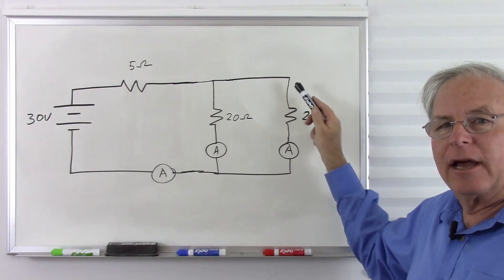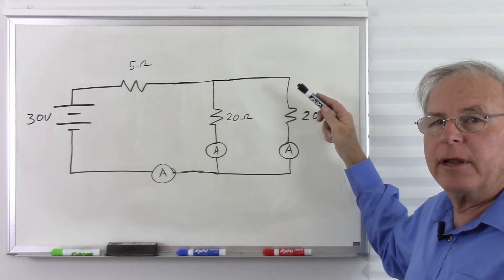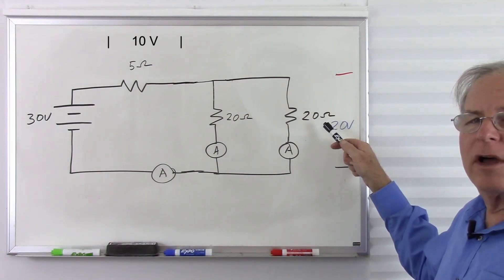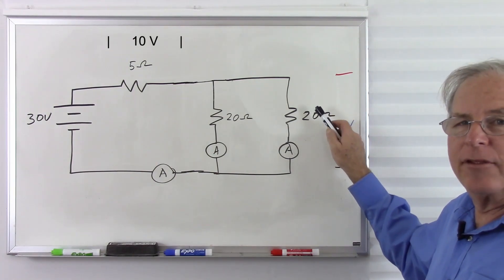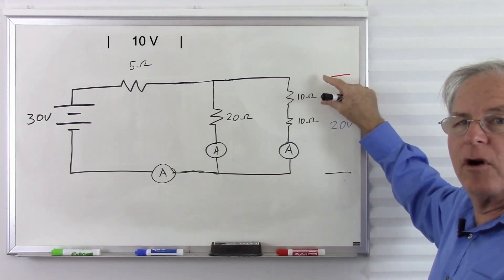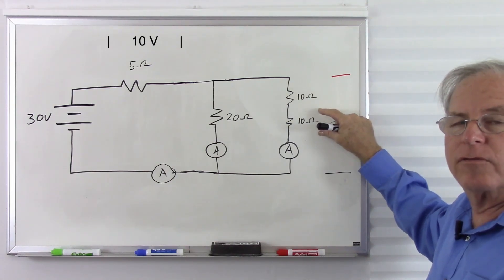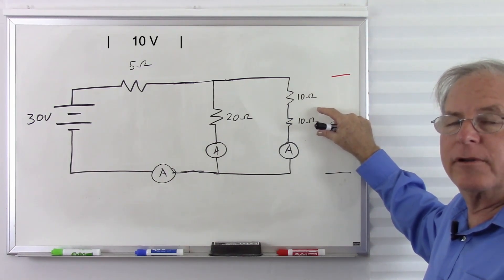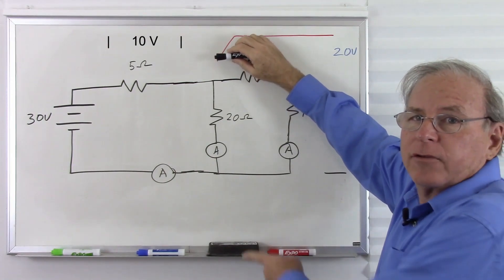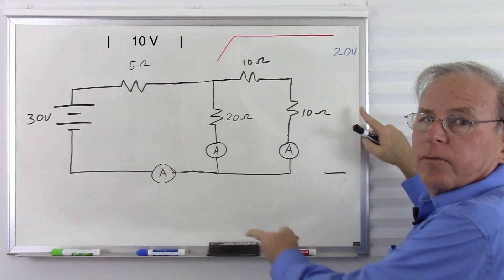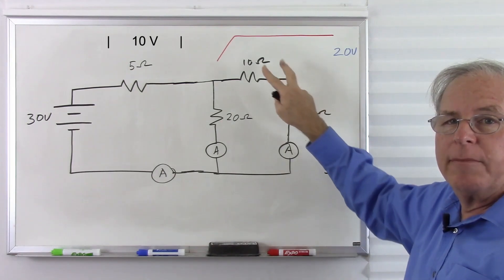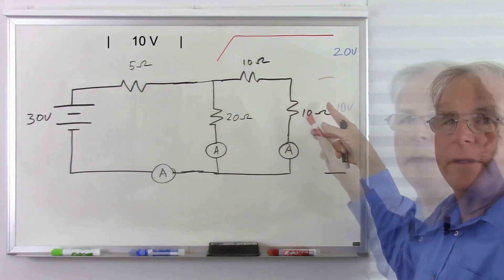Zooming back in, we already determined we start with 30 volts and lose 10, leaving 20 volts across this part of the circuit. Splitting the equivalent resistor back into the two individual resistors, we have 20 volts across both, so 10 volts across each one.